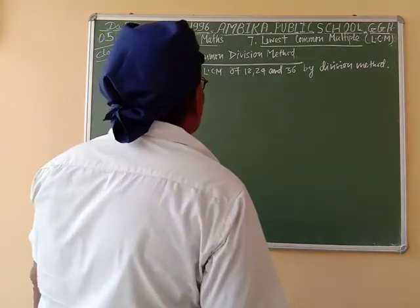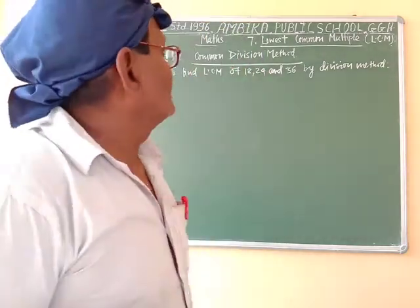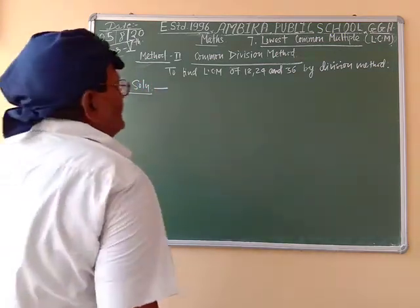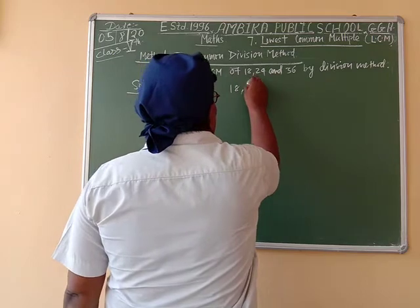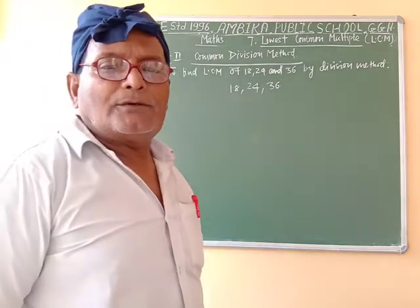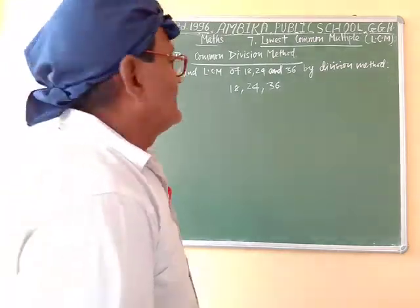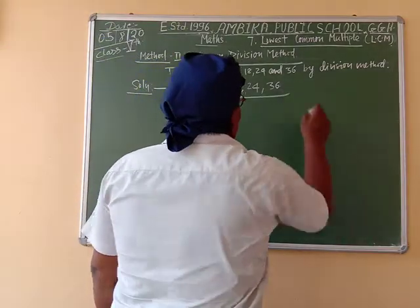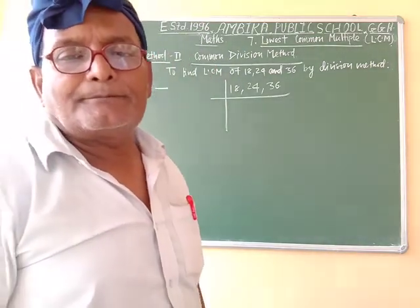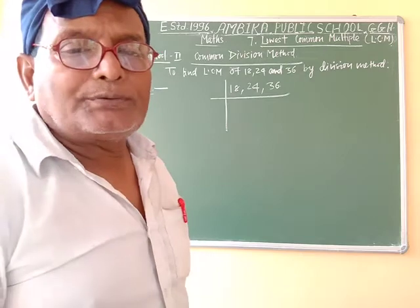First of all, write all the given numbers in a horizontal line, separating them by a comma. Then divide each of the given numbers by a suitable prime number.